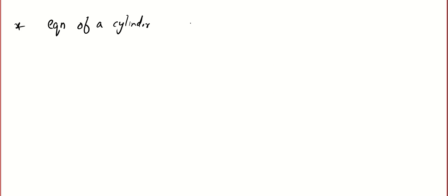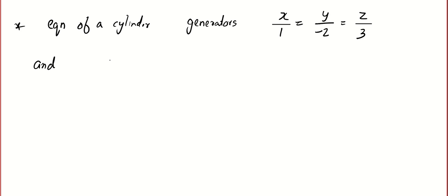Let's do one problem. Find the equation of a cylinder whose generators are parallel to the line x/1 = y/(−2) = z/3, and the guiding curve is given by 3x² + 2y² = 1, z = 4.